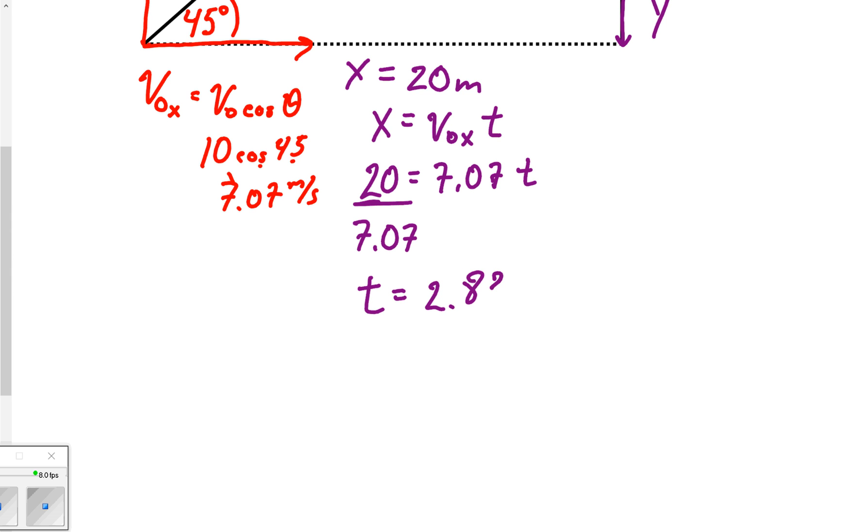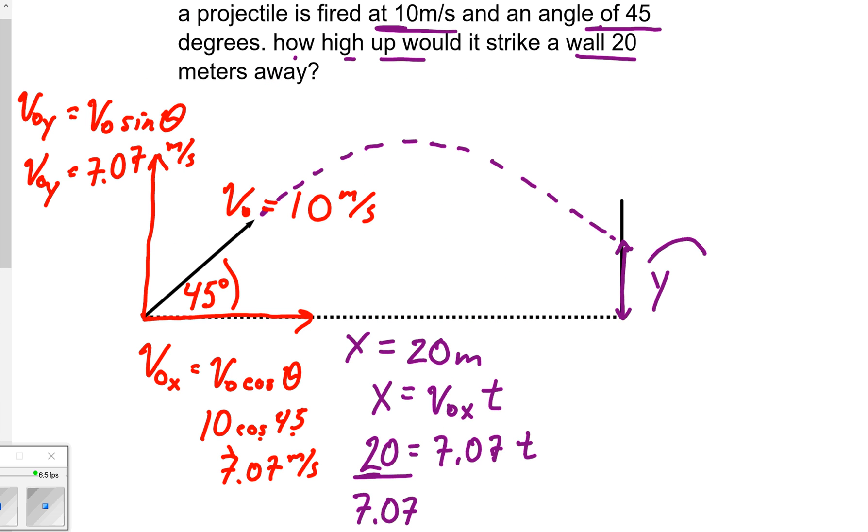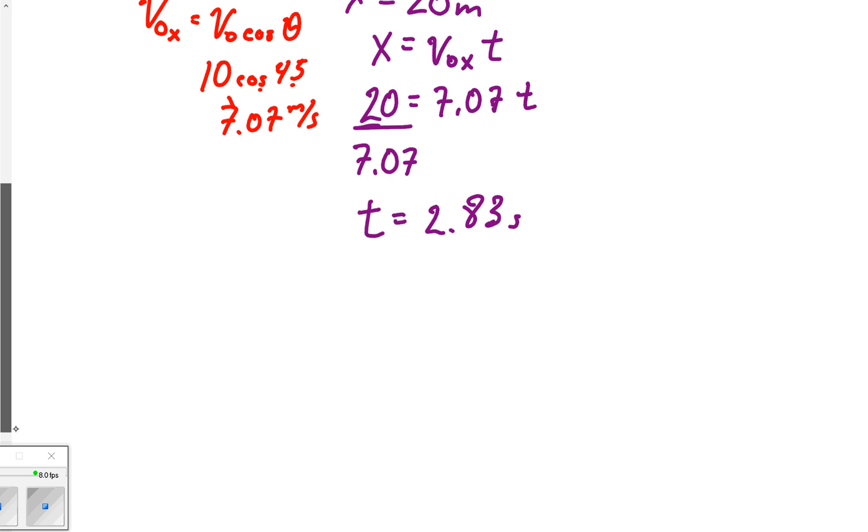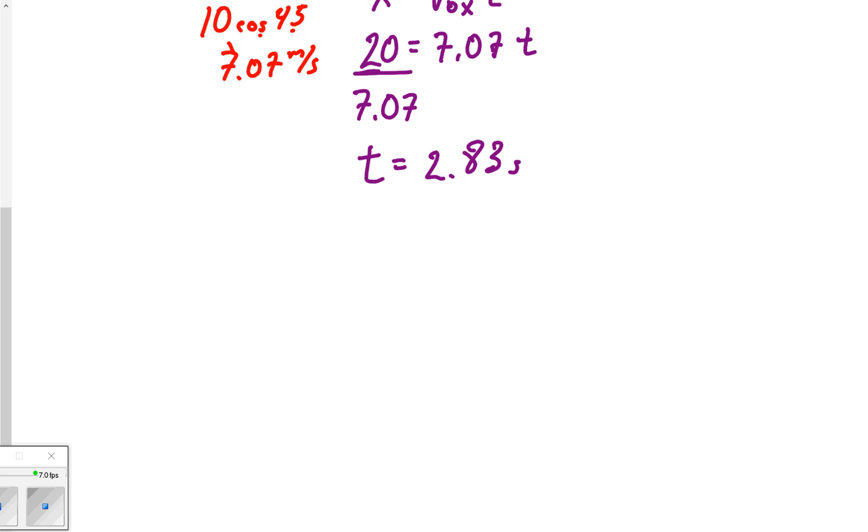Now I know my time is 2.83 seconds. That's great, but you may be looking at this now going, wait a second, it asks you to find how high. That's really no problem either because it asks me to find height and I have a great equation for finding y: y equals v₀ᵧ t plus one-half a t squared. What's cool is we already know v₀ᵧ is 7.07 and we know our time is 2.83.